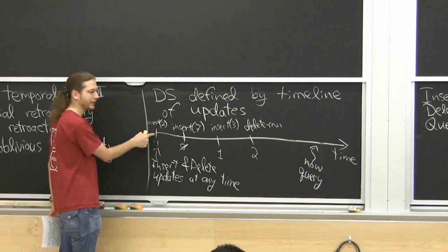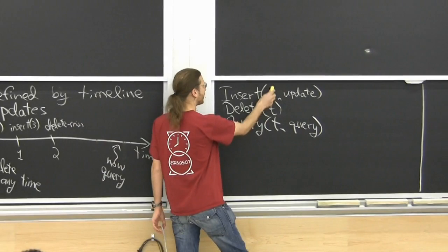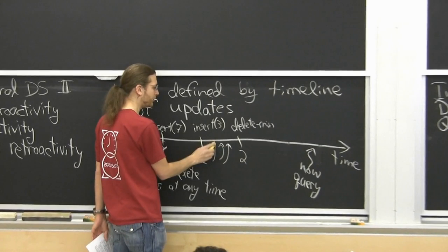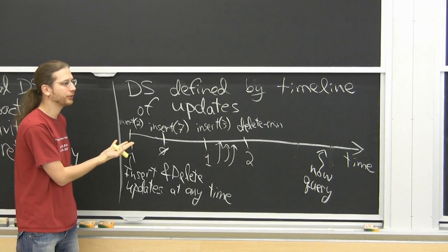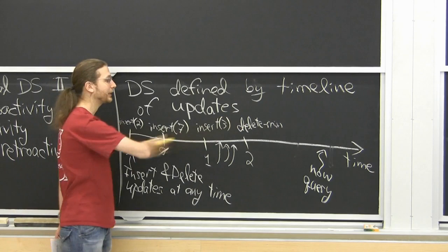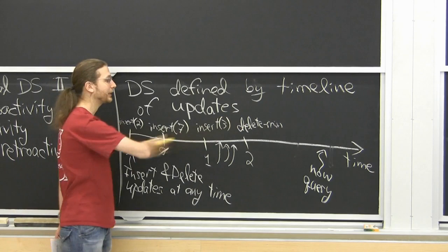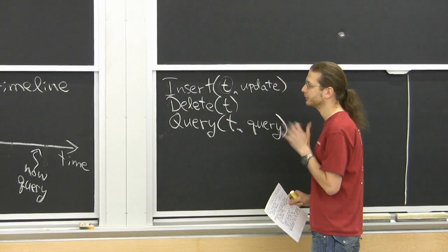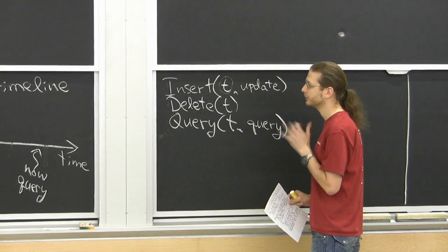What exactly does time mean here? You can think of them as just integers, but it gets awkward if you keep inserting new operations between 1 and 2. One easy solution is to use the order maintenance data structure mentioned last class — maintaining a linked list where you can insert new times between any two given times and still do order queries in constant time. If you don't mind logs, you could just store the times in a binary search tree.